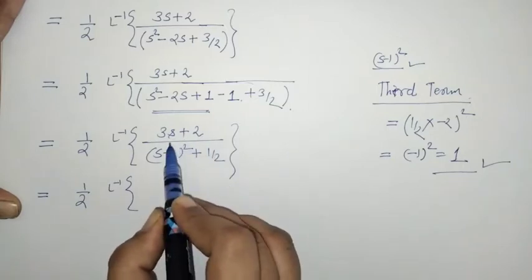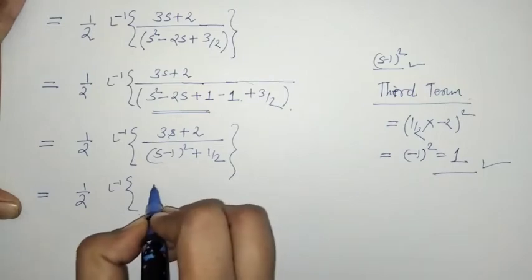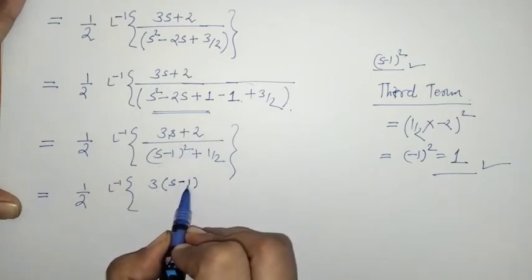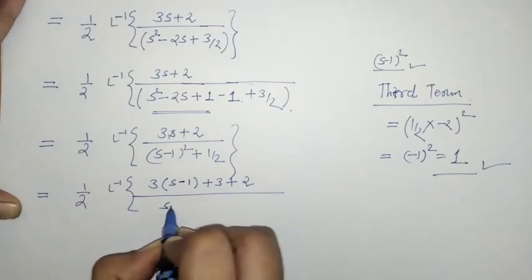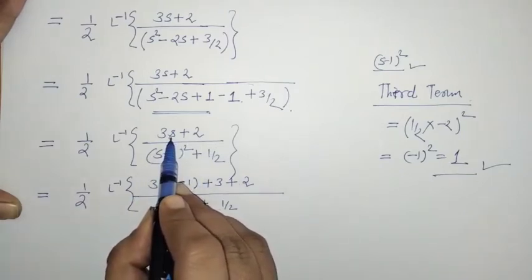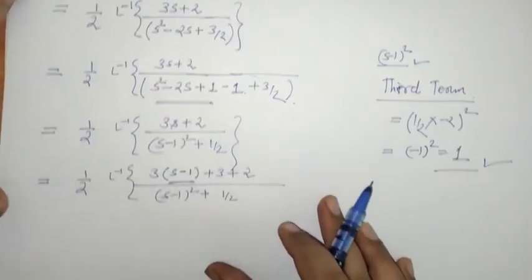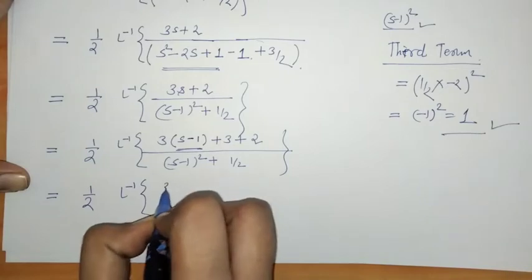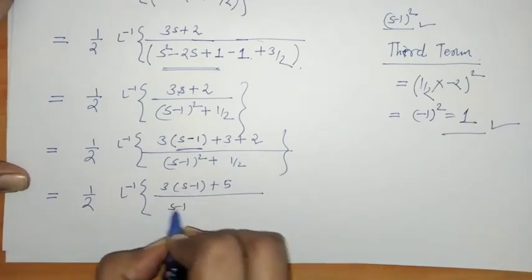For applying the first shifting property, we need to adjust the numerator (3s + 2) to contain (s − 1). We write 3s = 3(s − 1) + 3, so 3s + 2 = 3(s − 1) + 3 + 2 = 3(s − 1) + 5. The expression becomes L-inverse of [3(s − 1) + 5] upon [(s − 1)² + 1/2].